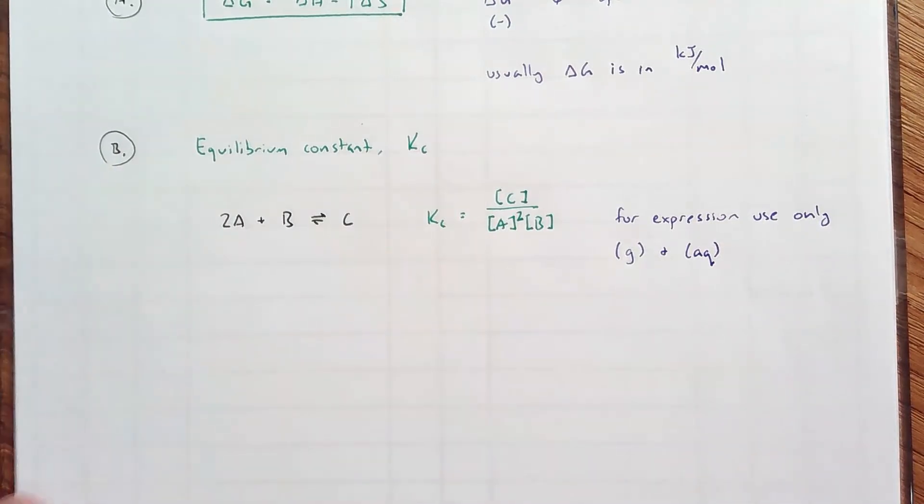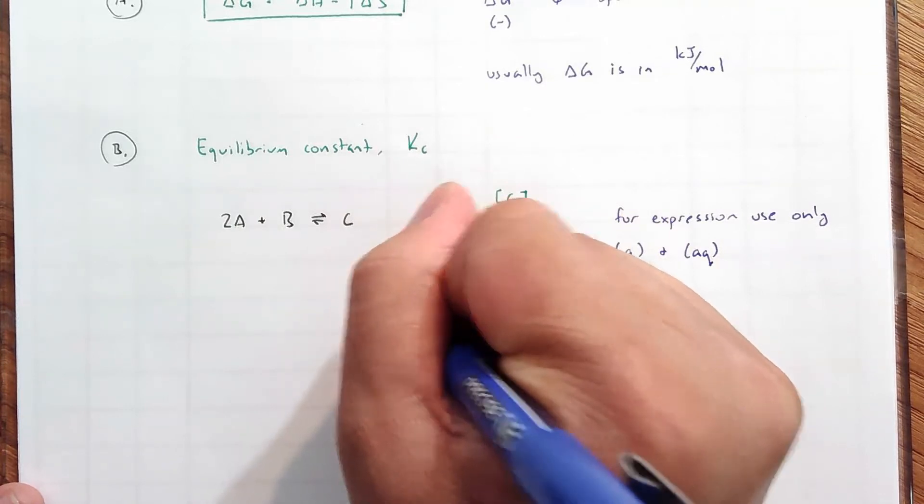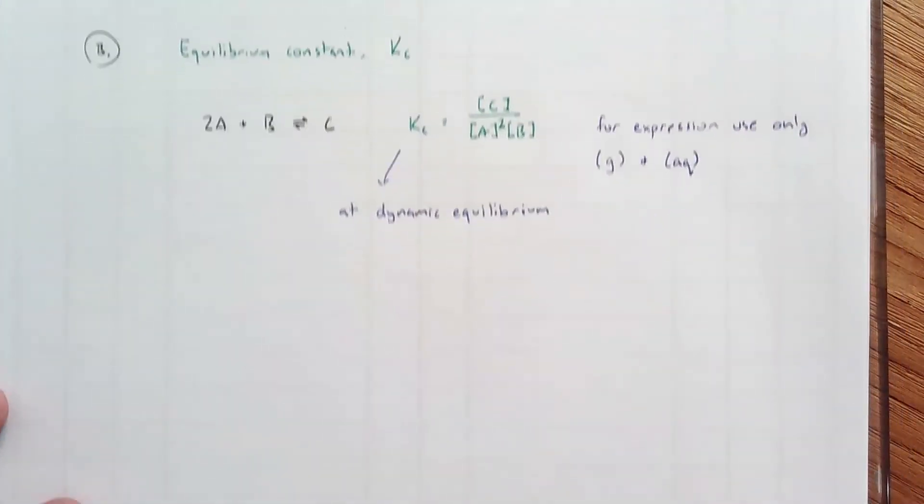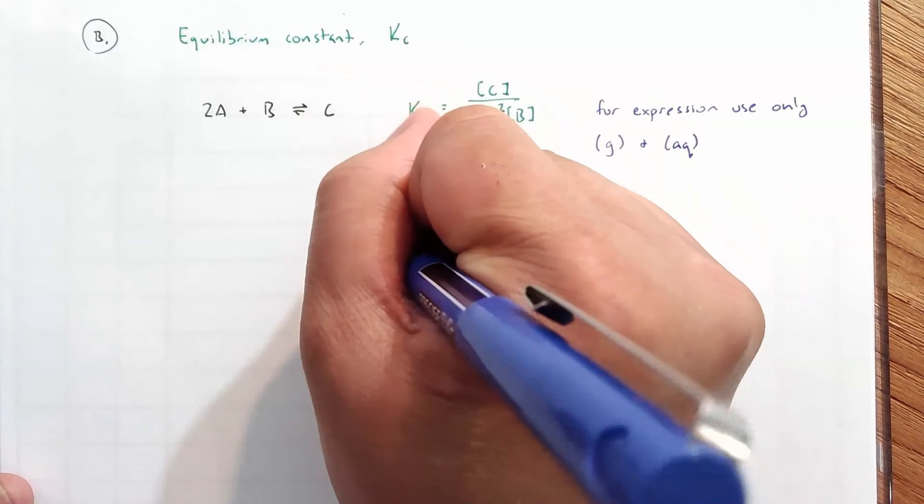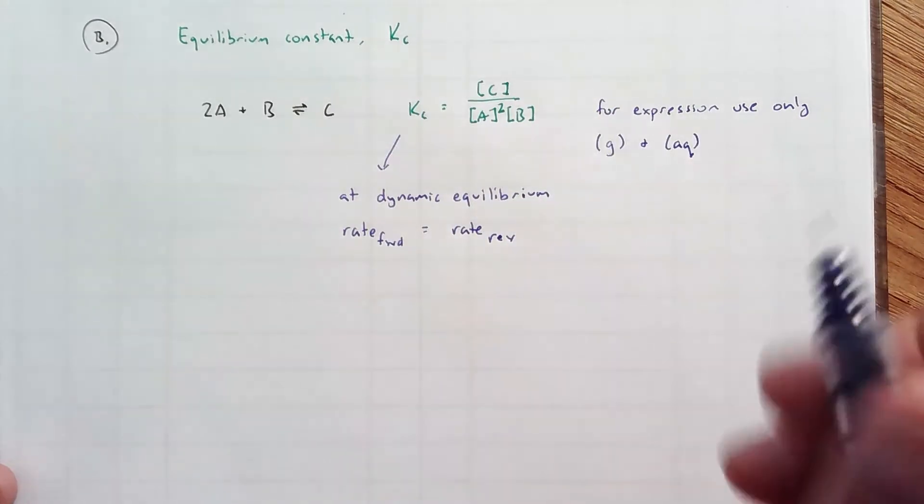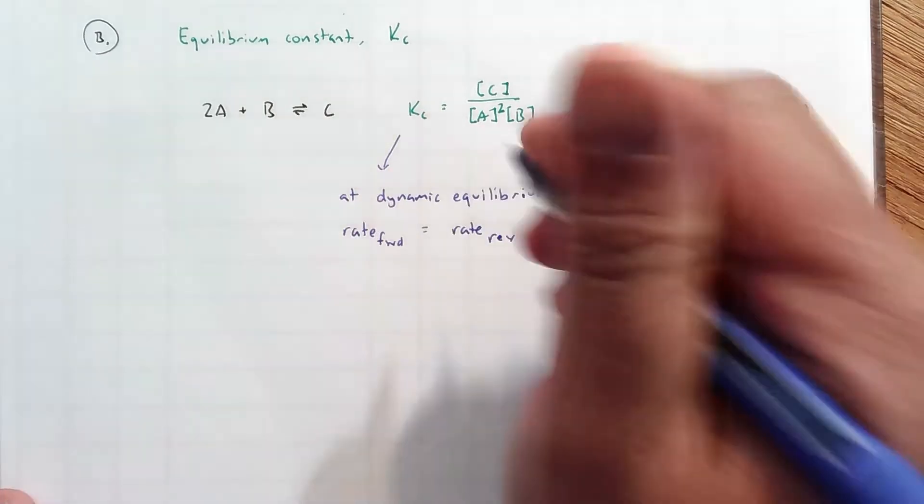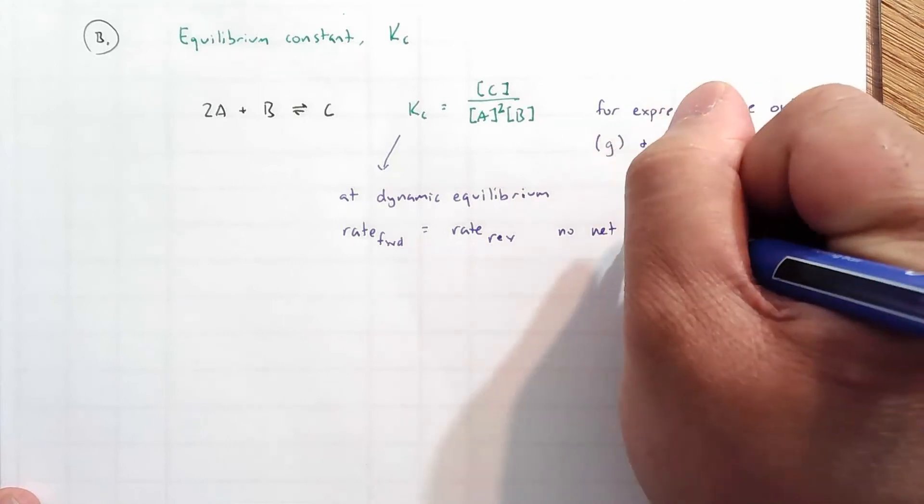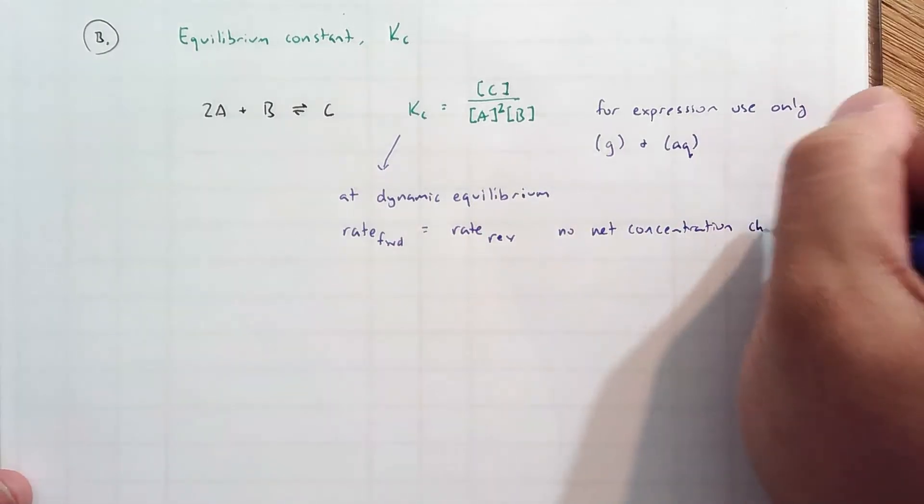When you have Kc, that means that the reaction is at equilibrium, or we call it dynamic equilibrium, to be a little more specific. And what that means is that the rate of the forward direction equals the rate in the reverse direction. And even though we are continually making C, and continually making A and B, the concentrations stay constant. So there is no net concentration change, even though the reactions are still happening. It is dynamic.